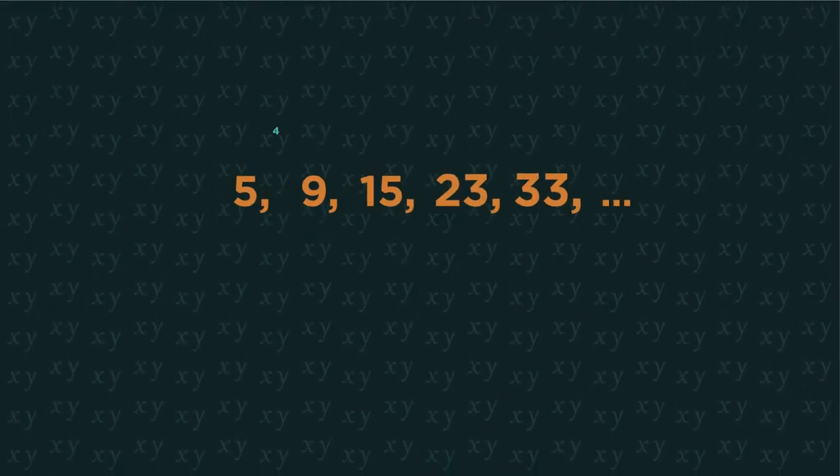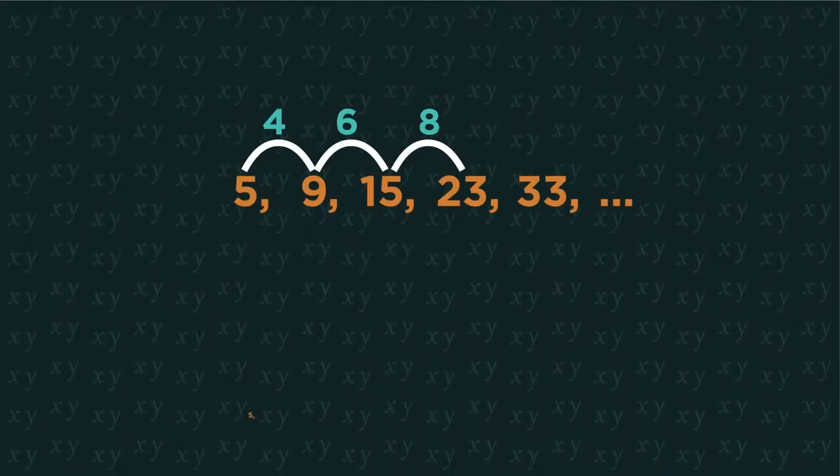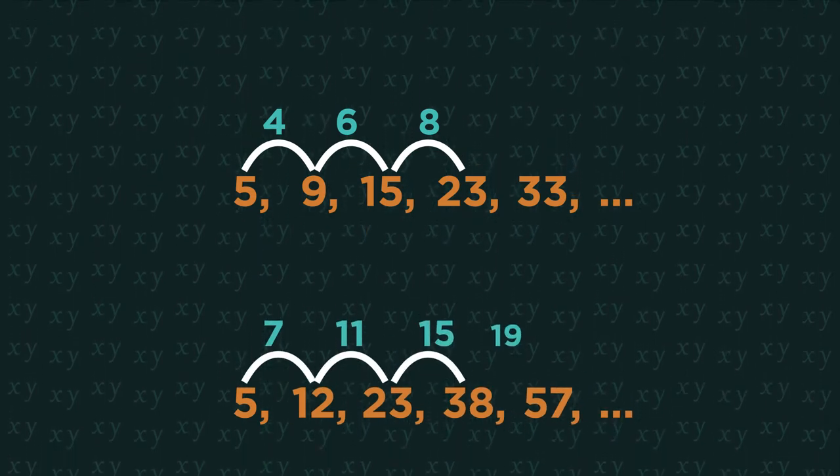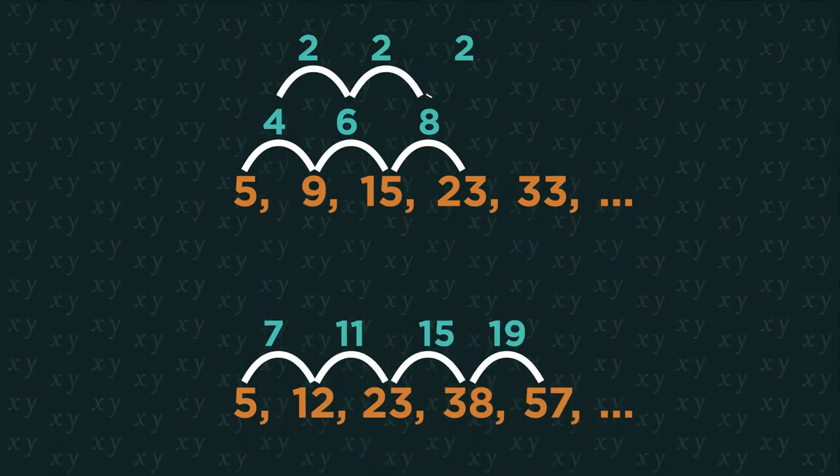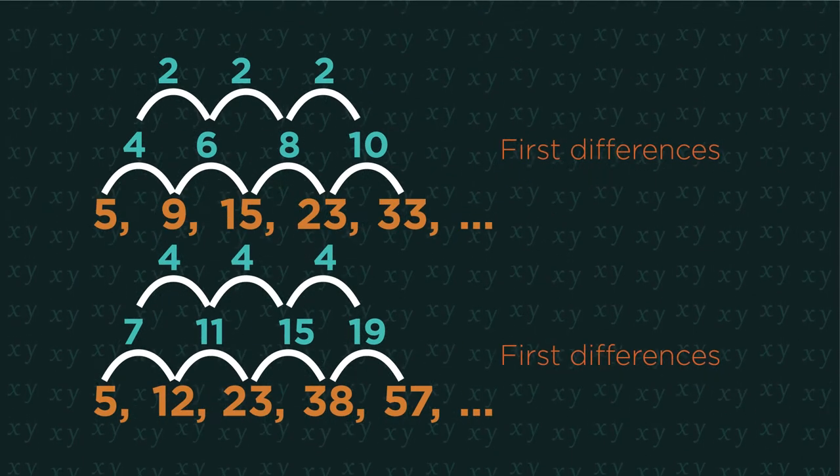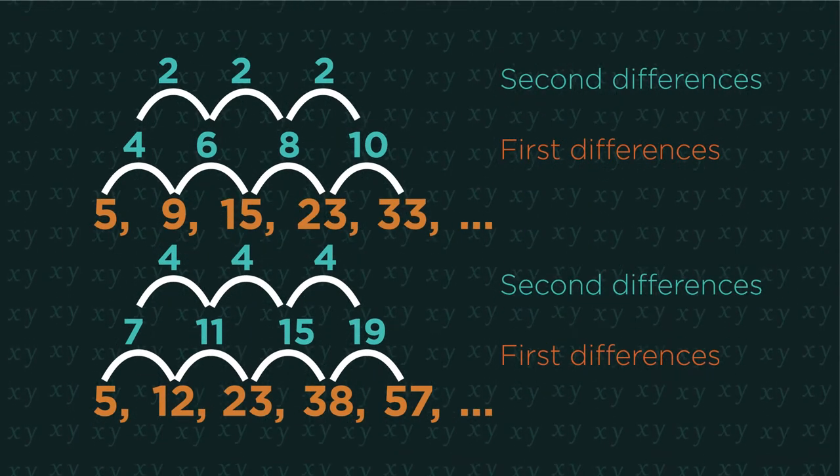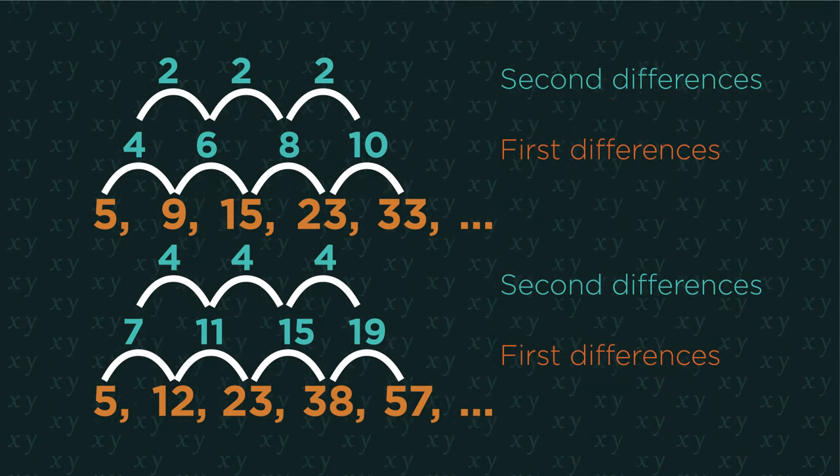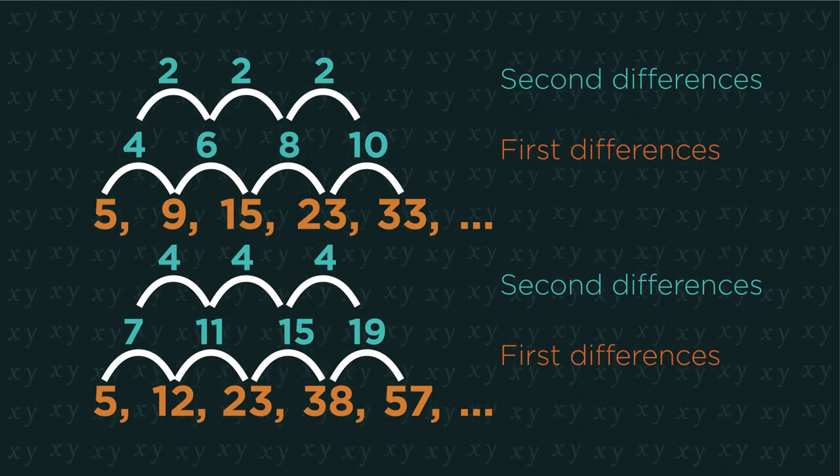Let's investigate these sequences. The difference changes every time. But now look at the second differences. If the second difference is constant, the sequence is quadratic.